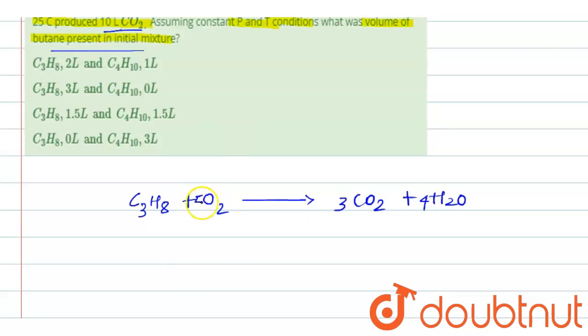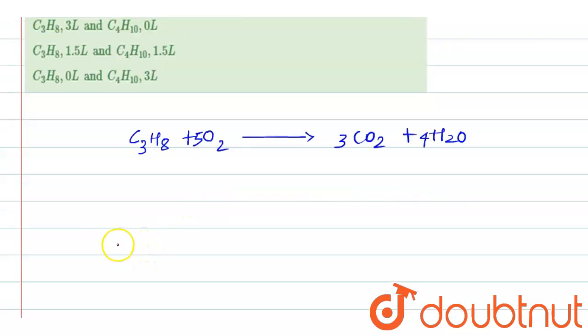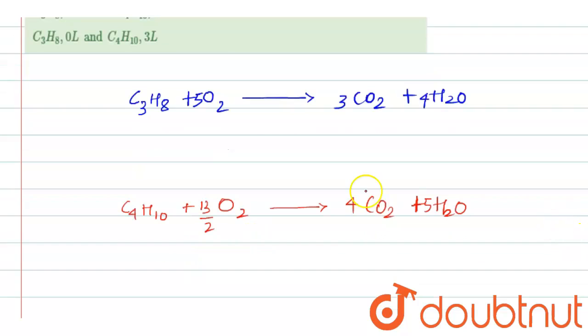In second step, write the combustion reaction of butane, that is C4H10 when heated in presence of oxygen, it will form carbon dioxide and water. And how many oxygen are there? 13. So it will be 13 by 2 O2. Now this reaction is balanced.